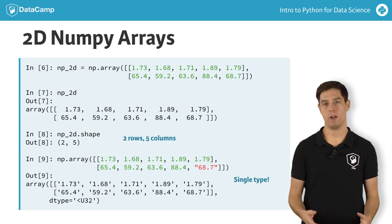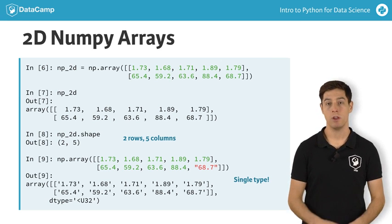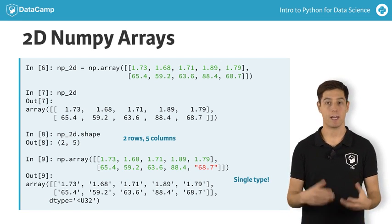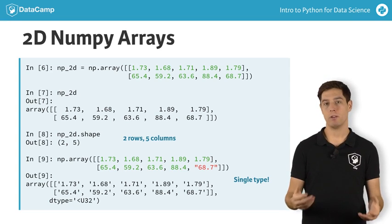You can think of the 2D numpy array as an improved list of lists. You can perform calculations on the arrays, like I showed before, and you can do more advanced ways of subsetting.